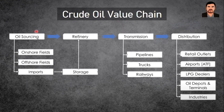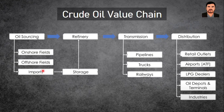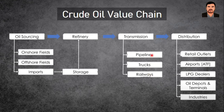The crude oil value chain begins with oil sourcing, which can be from an onshore field on land or an offshore field in the ocean or sea. In India, we have both onshore and offshore oil fields, but we are also a major importer of crude oil. After oil sourcing, the crude is stored and then refined. Once refining is done, transmission occurs — transporting the refined products to various places of consumption through pipelines, trucks, or railways.